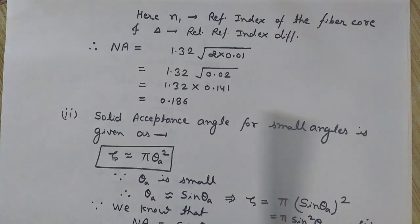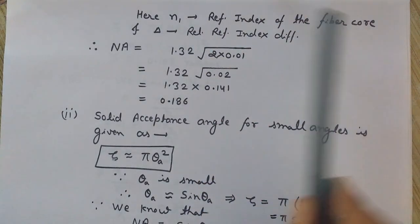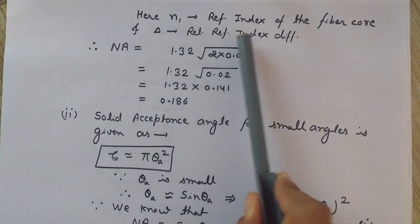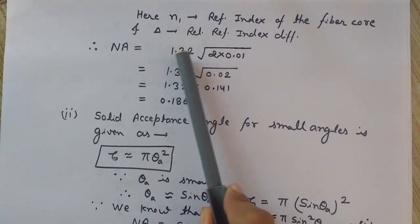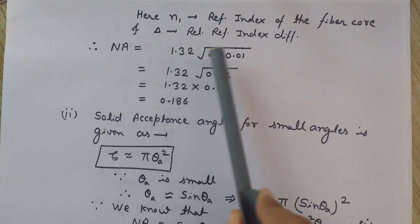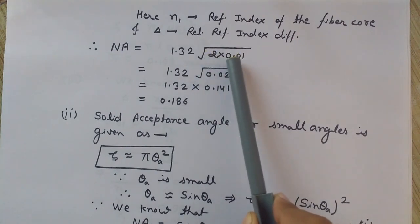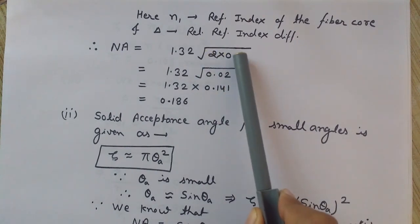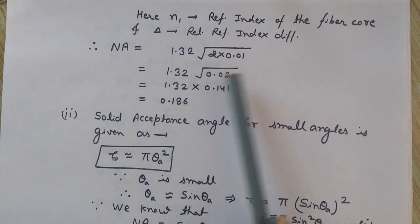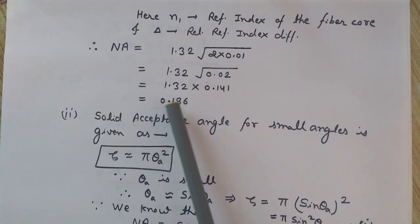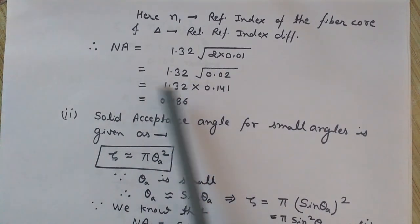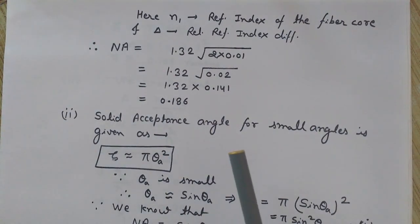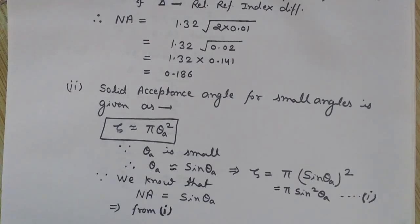Here n1 is the refractive index of the core and delta is the relative refractive index difference. Putting in the values: n1 = 1.32, under root of 2 × 0.01. Calculating this, we get 0.186 as the numerical aperture.